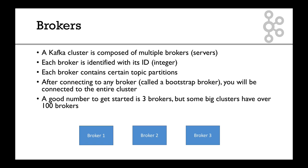Each broker contains certain topic partitions. After you connect to any broker — just one, which is called a bootstrap broker — you'll be connected to the entire cluster. A good number of brokers to get started with in Kafka is three, but some big clusters for really big companies have over 100 brokers, which shows how much Kafka can scale horizontally.